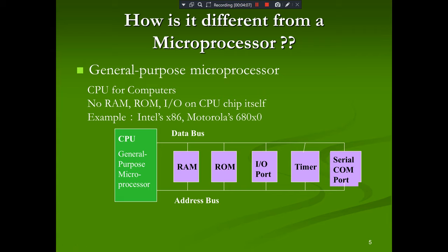The difference between microcontrollers and microprocessors: in a general-purpose microprocessor, the CPU does not have RAM, ROM, or I/O ports on the chip itself. In a microcontroller, RAM, ROM, and I/O ports are all on a single chip. In a microprocessor, the data bus, address bus, RAM, I/O ports, timers, and serial COM ports are all connected externally — not on a single chip. That is the main difference.